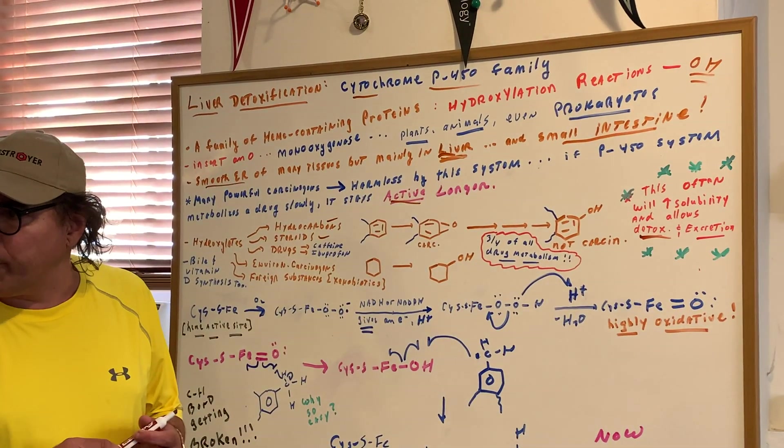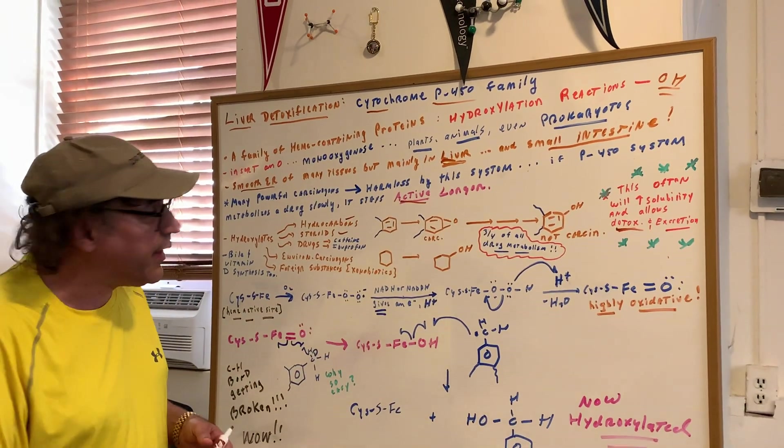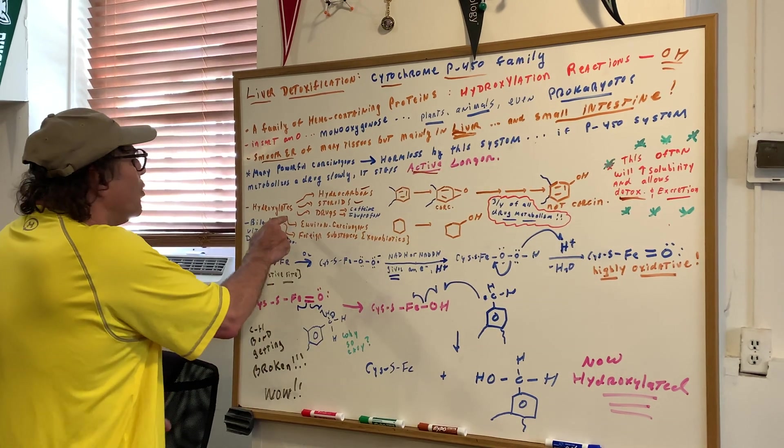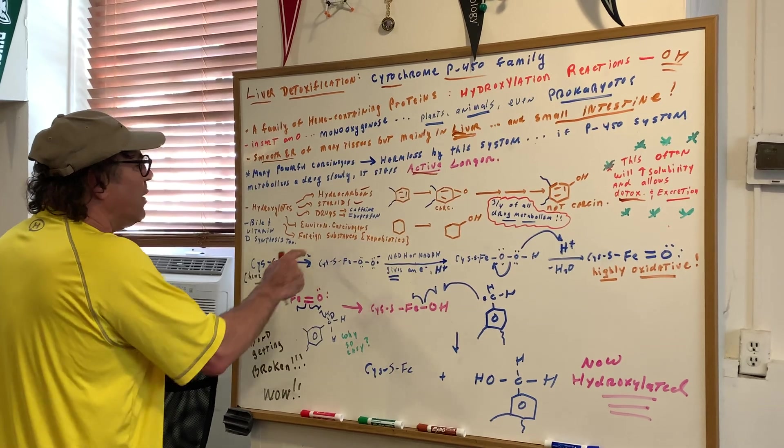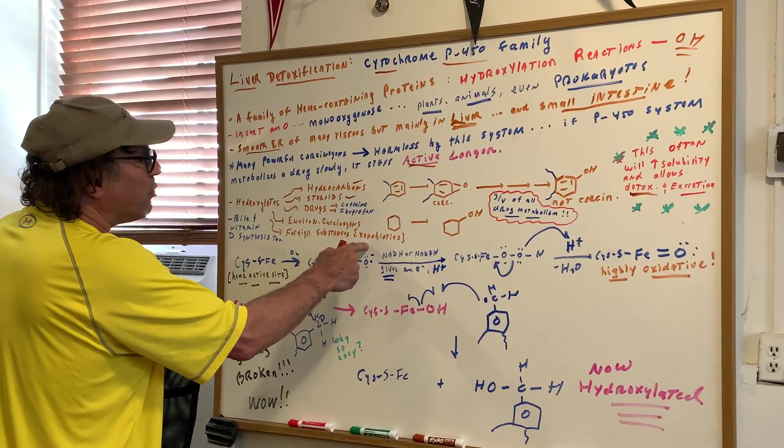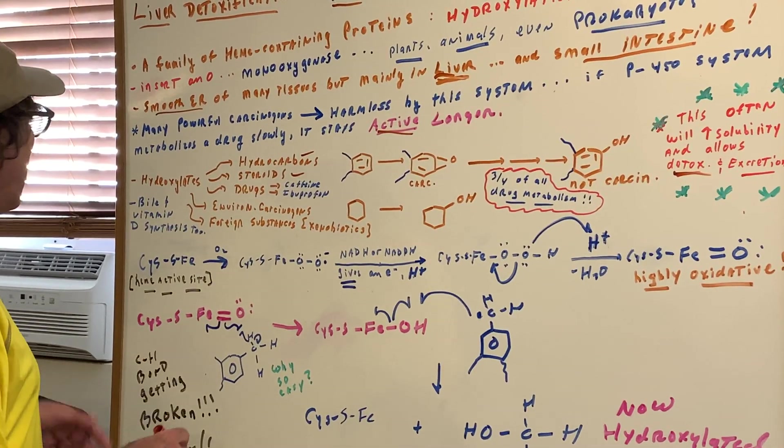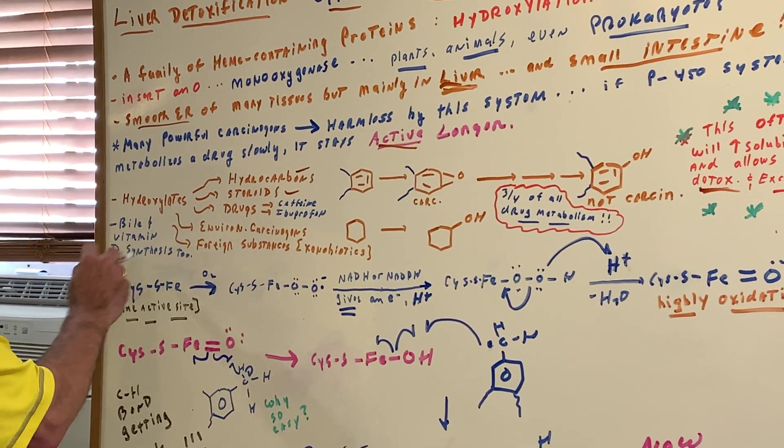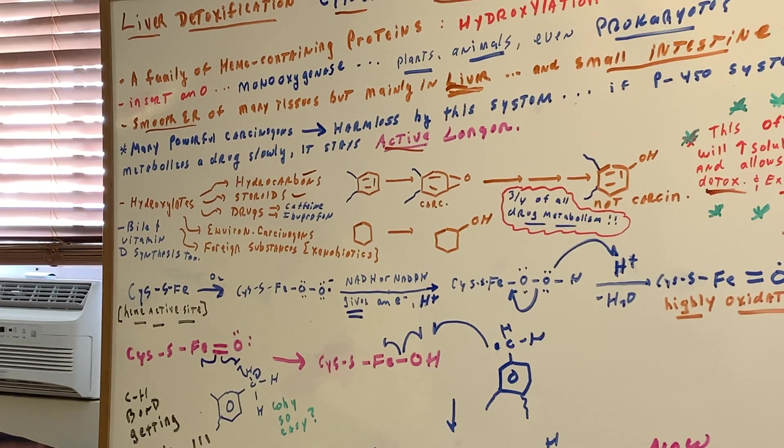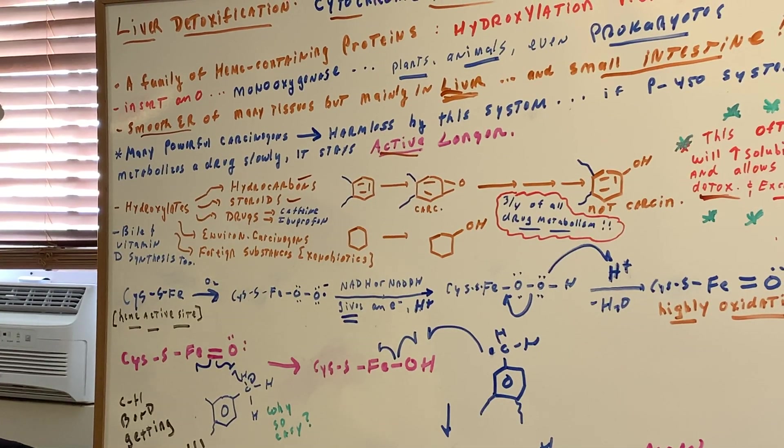That's the most important thing I want you to get out of the lecture. So the whole point of this cytochrome P450 family, the point of hydroxylation, is to render things soluble, and if they're soluble, they can undergo excretion. That's the thing that I want you to really get out of it for the DAT, the OAT, the MCAT. We would also see environmental carcinogens hydroxylated. Even foreign substances which we call xenobiotics undergo hydroxylation, and also bile and vitamin D synthesis is going to undergo hydroxylation reactions.